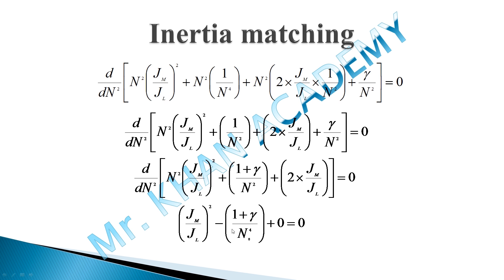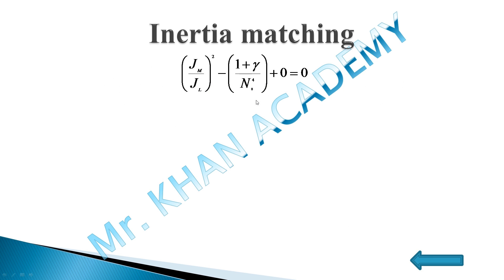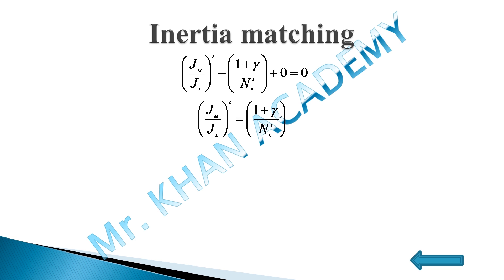Moving the minus term to the right-hand side: (Jm/Jl)² = (1+γ)/n₀⁴. Therefore Jm/Jl = √[(1+γ)/n₀²], which gives the final equation relating motor inertia, load inertia, the gamma parameter, and optimal gear ratio n₀.